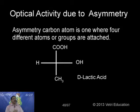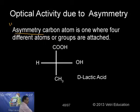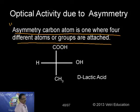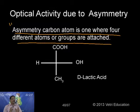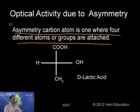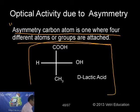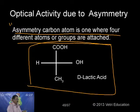Optical activity due to asymmetry - asymmetry means we say asymmetric carbon in organic chemistry. An asymmetric carbon atom is one where four different atoms or groups are attached. This is the most important condition. If you want to assess whether a particular compound is optically active or not, just look at the central carbon - if any four different atoms or groups are attached, that carbon is said to be an asymmetric carbon.